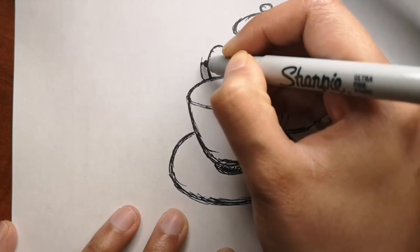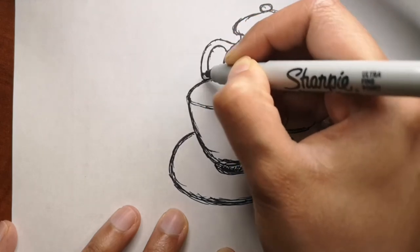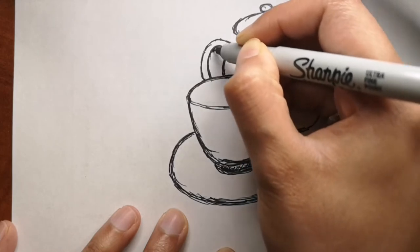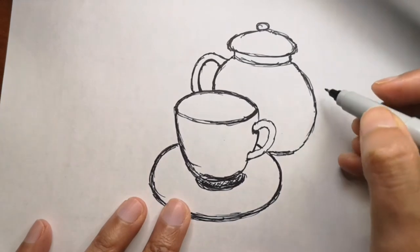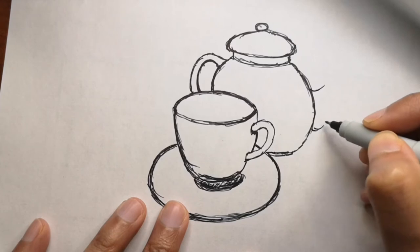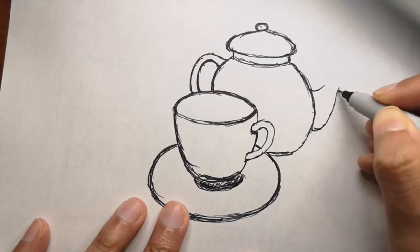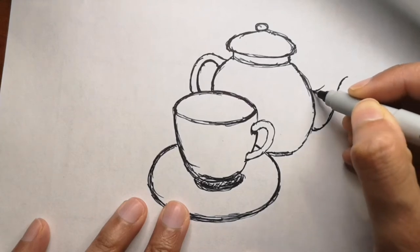China invented the teapot. Teapots were exported from China to Europe by the late 1600s, and in the 1700s, Europeans were successful in creating their own pots after much trial and error with inferior porcelain.